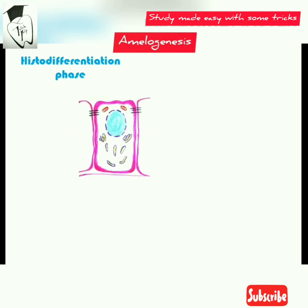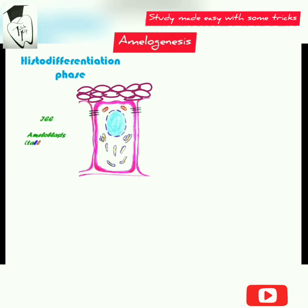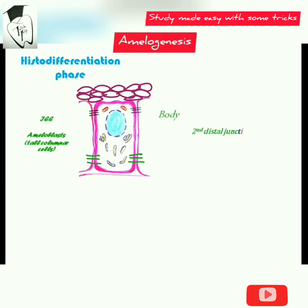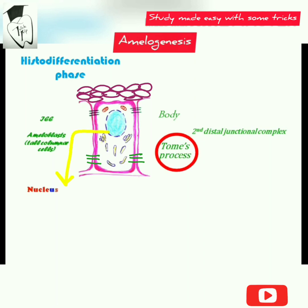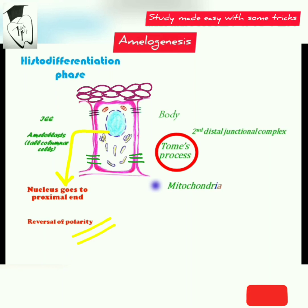In the histo-differentiation phase, the inner enamel epithelial cells differentiate into ameloblasts, becoming tall columnar cells. A second distal junctional complex develops, dividing the cell into a body and a distal extremity that develops into Tomes' process. The nucleus moves to the proximal end — a process called reversal of polarity — and mitochondria cluster around the infranuclear zone, below the nucleus.